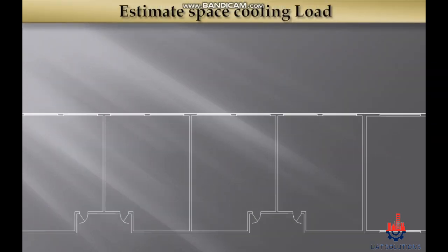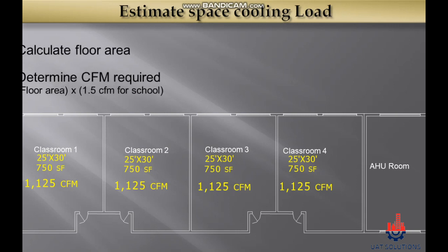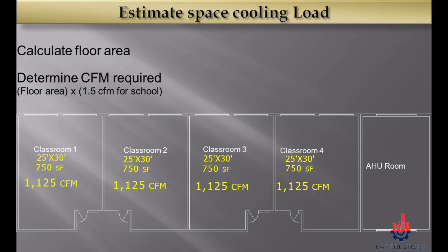Let's calculate the space cooling load using the formula we just discussed. Classroom 1 has a floor area of 25 by 30 feet, making it 750 square feet in total. We will get the cooling load by multiplying 750 by 1.5, which equals 1,125 CFM.